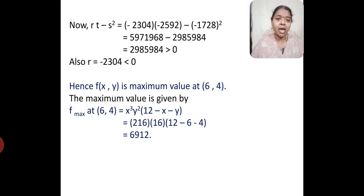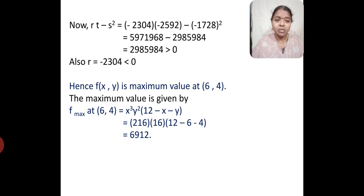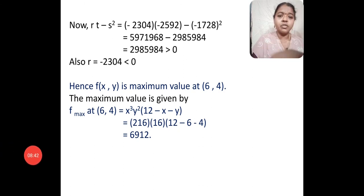Now let's check the condition rt minus s squared. On substituting the values of r, s, and t and simplifying, we get a positive number which is greater than 0, and the r value is less than 0. Since rt minus s squared is greater than 0 and r is less than 0, f will be maximum at the point (6, 4). The maximum value f_max at (6, 4) is obtained by substituting x equal to 6 and y equal to 4 in the given equation, which gives the answer as 6912.